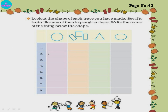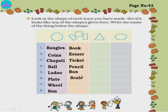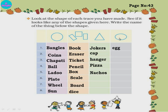Write the name of the things below the shape - which tracing was circle, which was oval, which was triangle, which was rectangle, which was square. For circle shape: bangles, coins, chapati, ball, ladoo, plate, wheel, sun. For rectangle or square: book, eraser, ticket, pencil box, scale, board. For triangle shape: joker's cap, hanger, pizza slice, nachos chips. For oval shape: egg, potato, mirror.